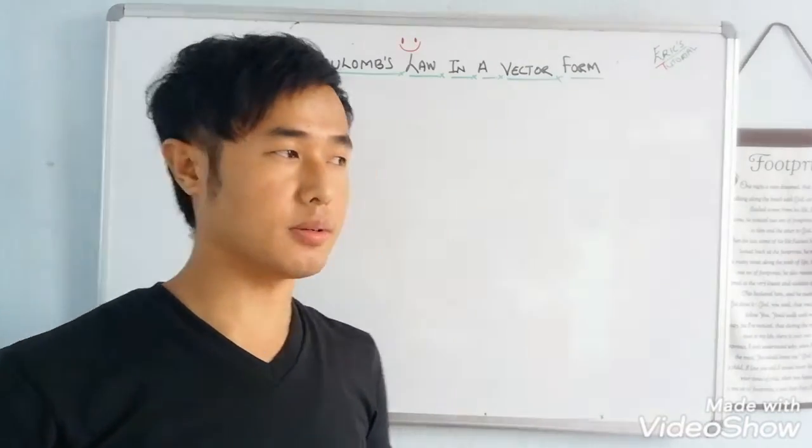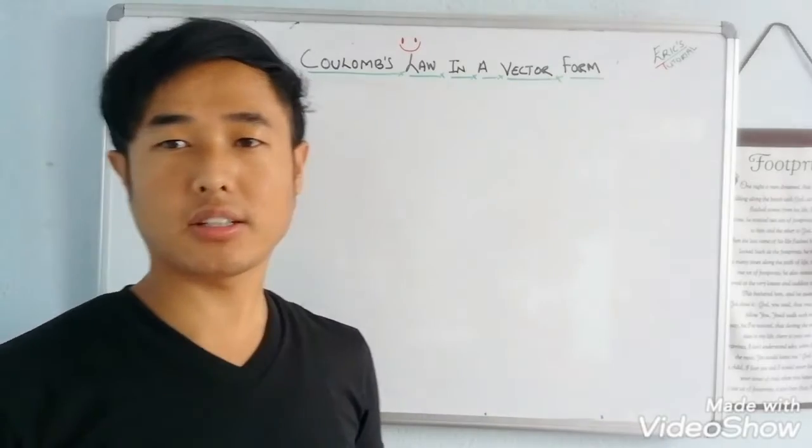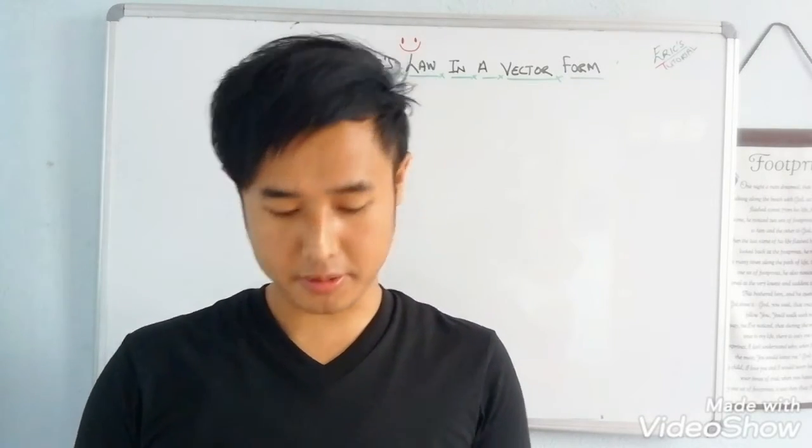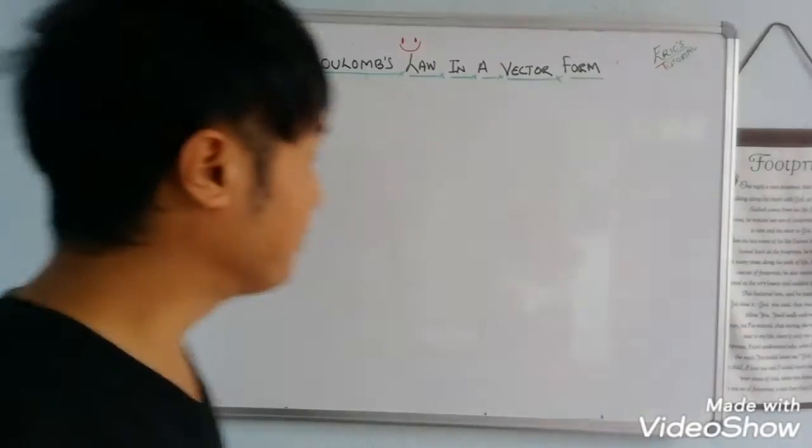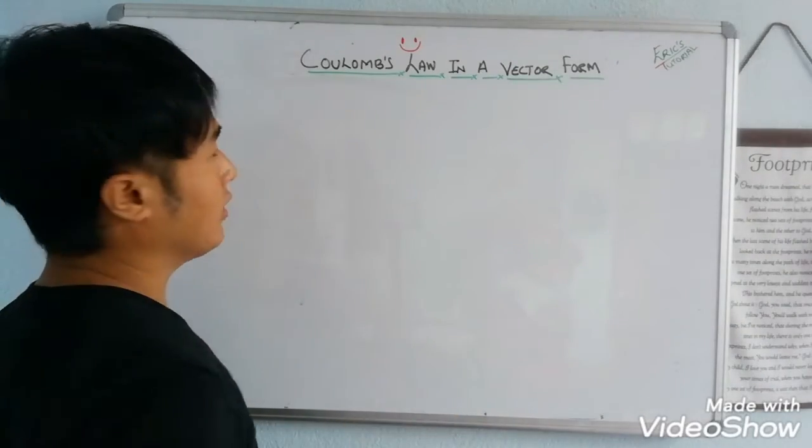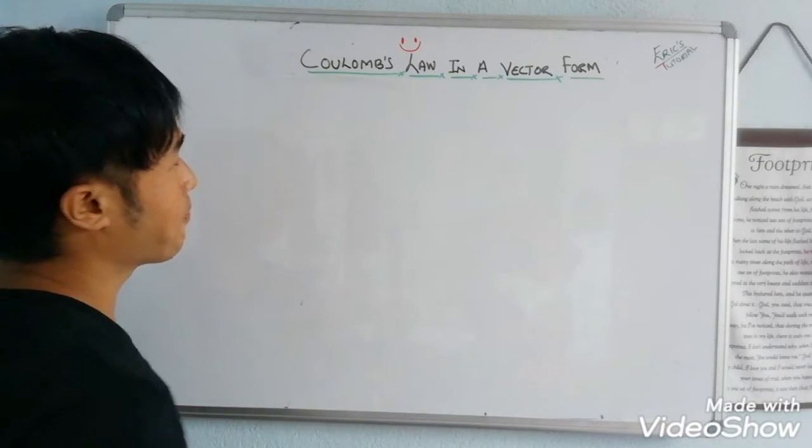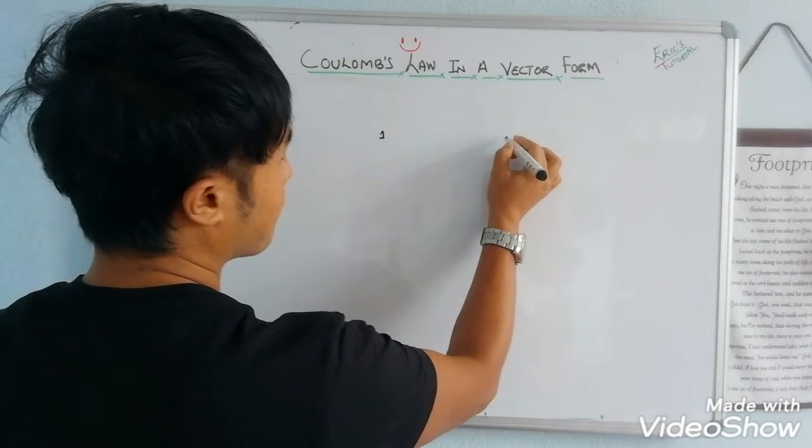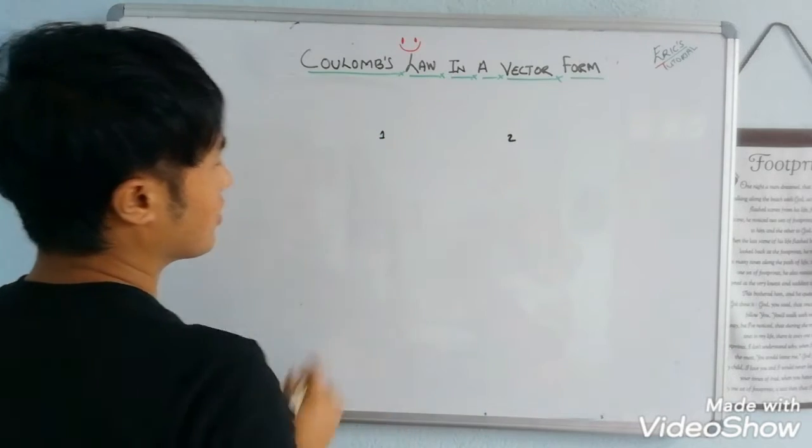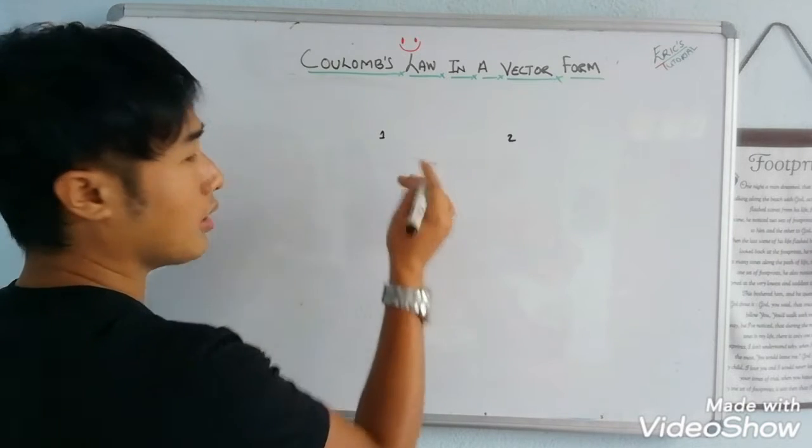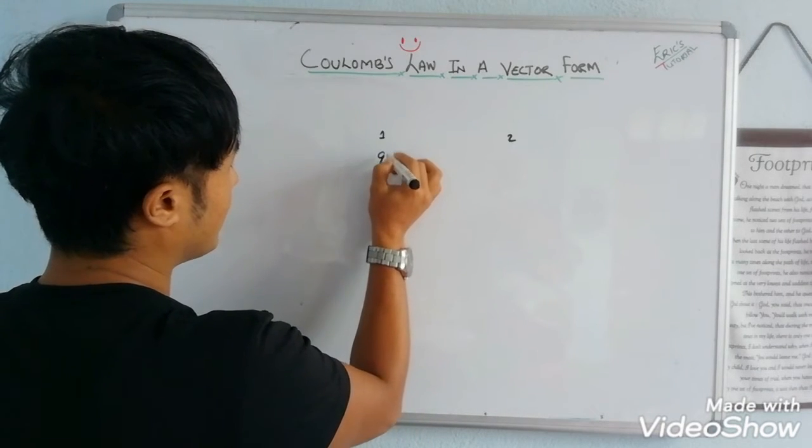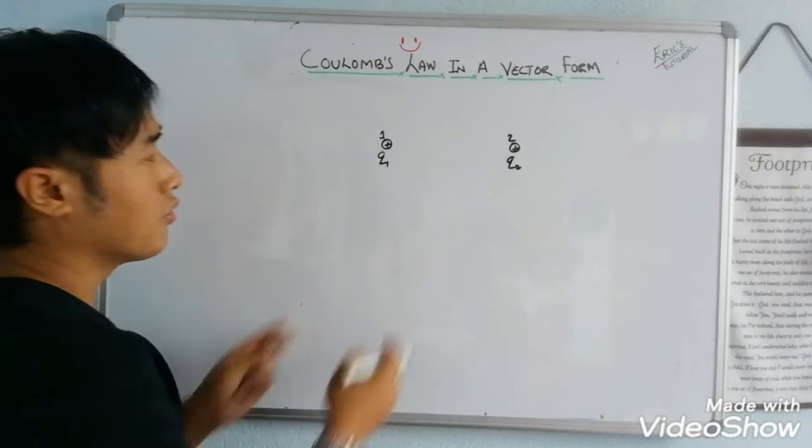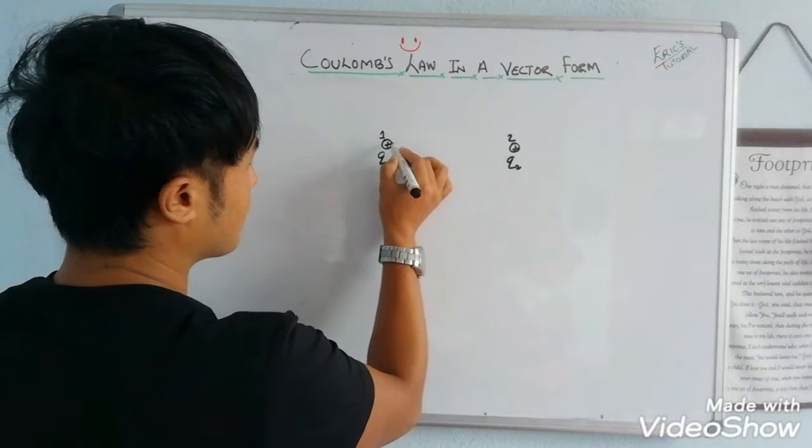It is important. I am going to talk about Coulomb's law in a vector form. So we are going to consider two points, point 1 and point 2. In these two points, the two charges are positive. Q1 is positive, Q2 is positive, which is separated by a certain distance which is R.